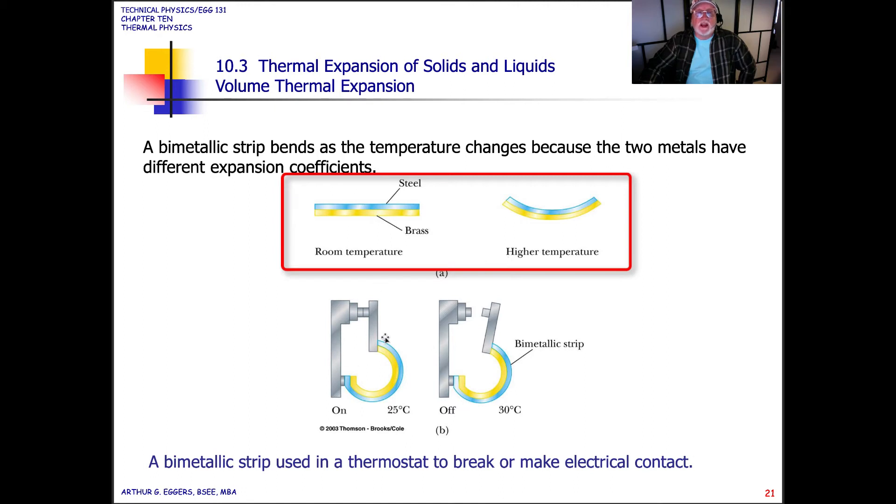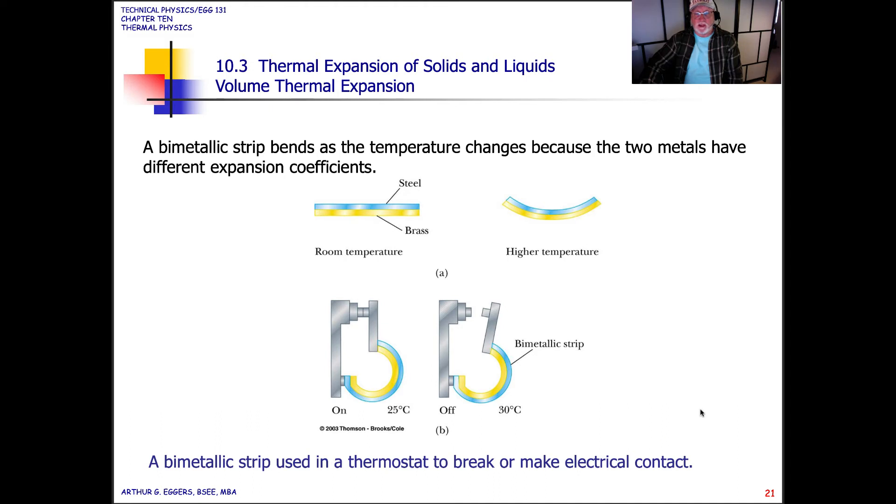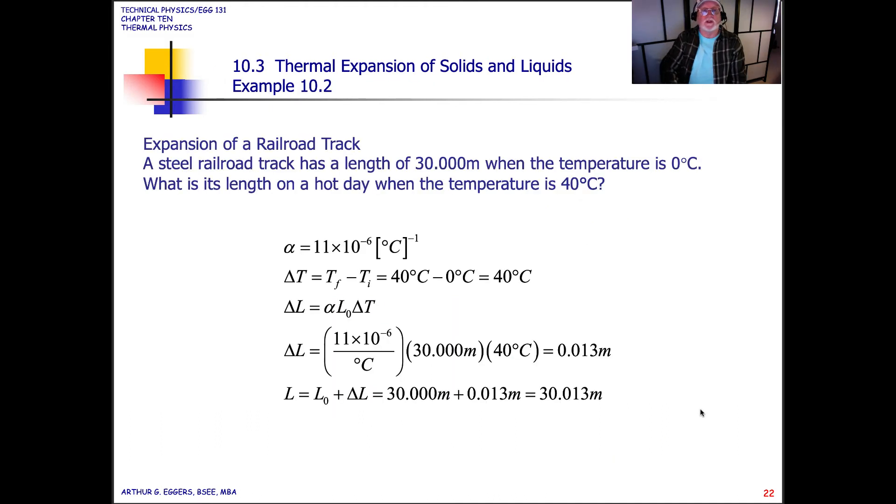So if we use this with a contact switch, like for your heater and air conditioner in your home, then we have an on position set to a dissimilar material relationship of 25 degrees Celsius. When it goes up five degrees, you can see it breaks contact, and in this case would turn off the air conditioner or a heater. So the bimetallic strip is used in a thermostat to make or break electrical contact.